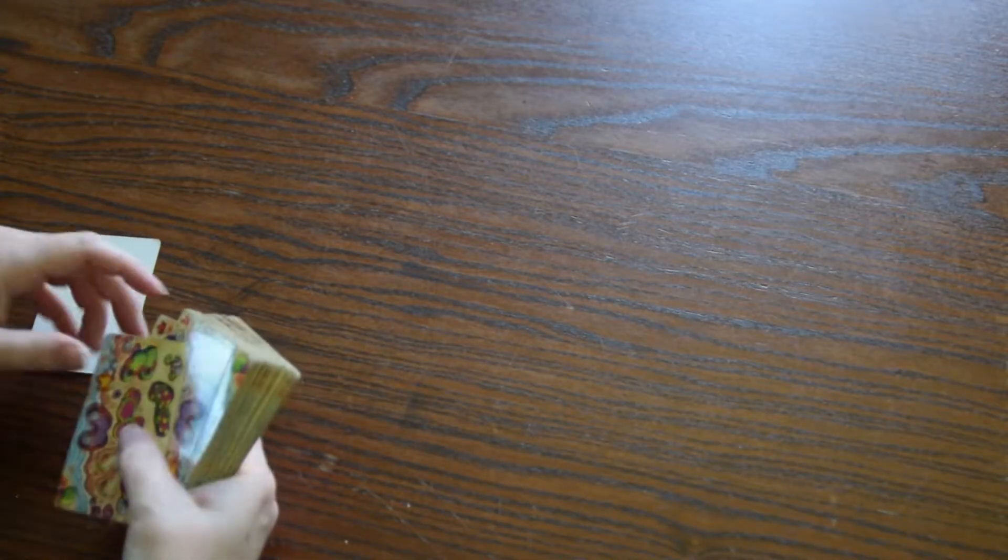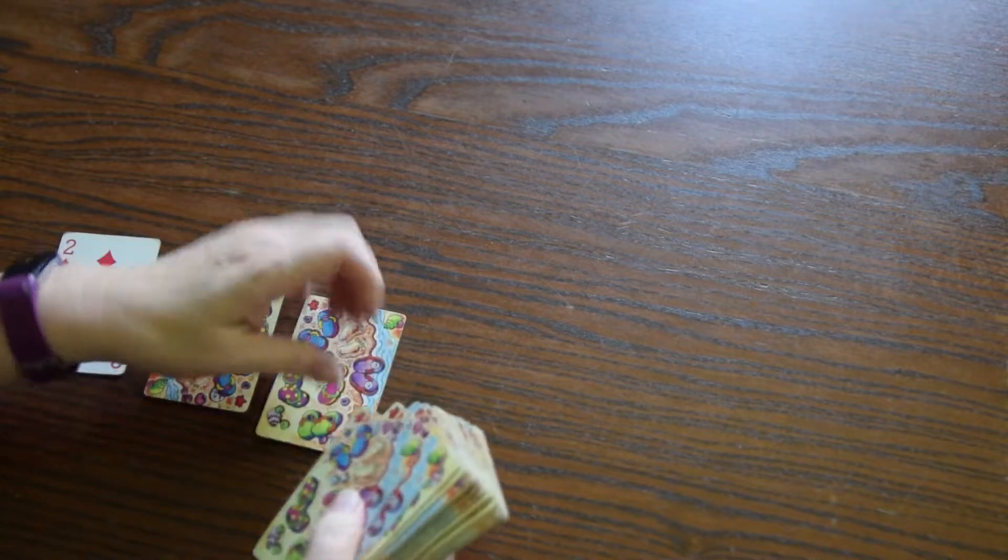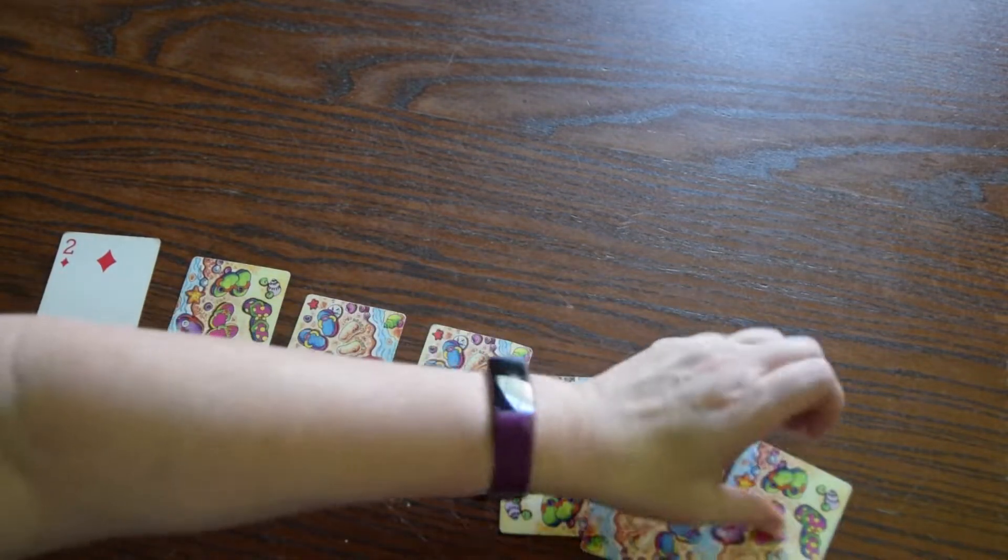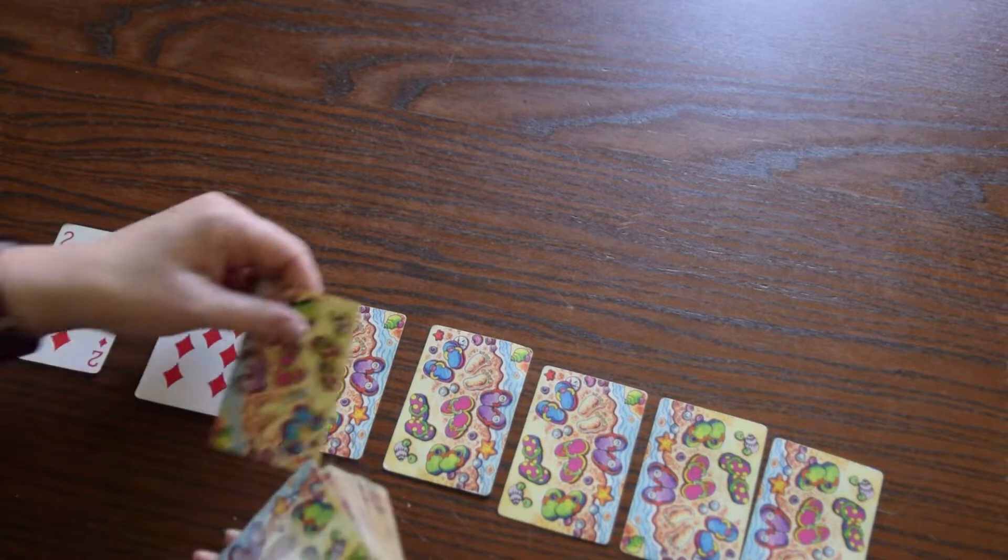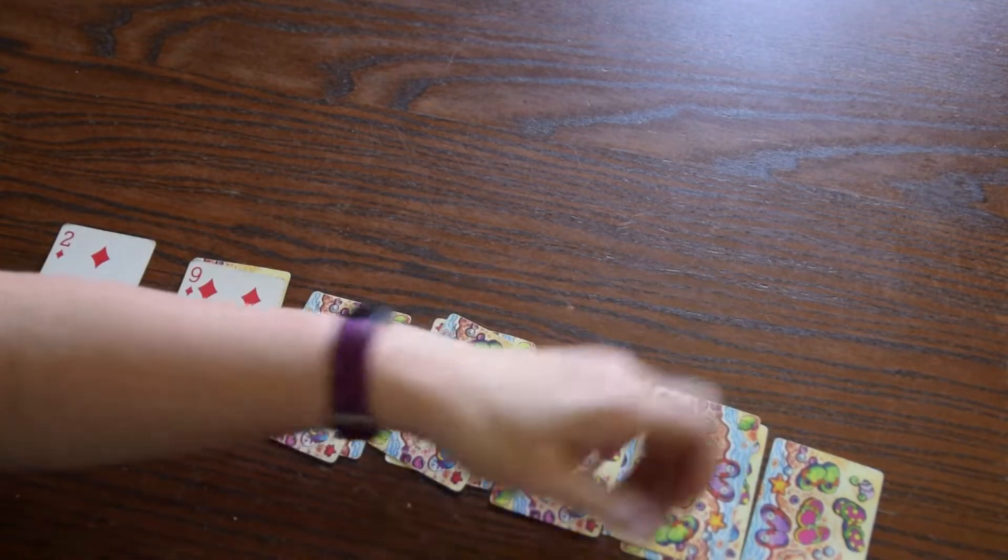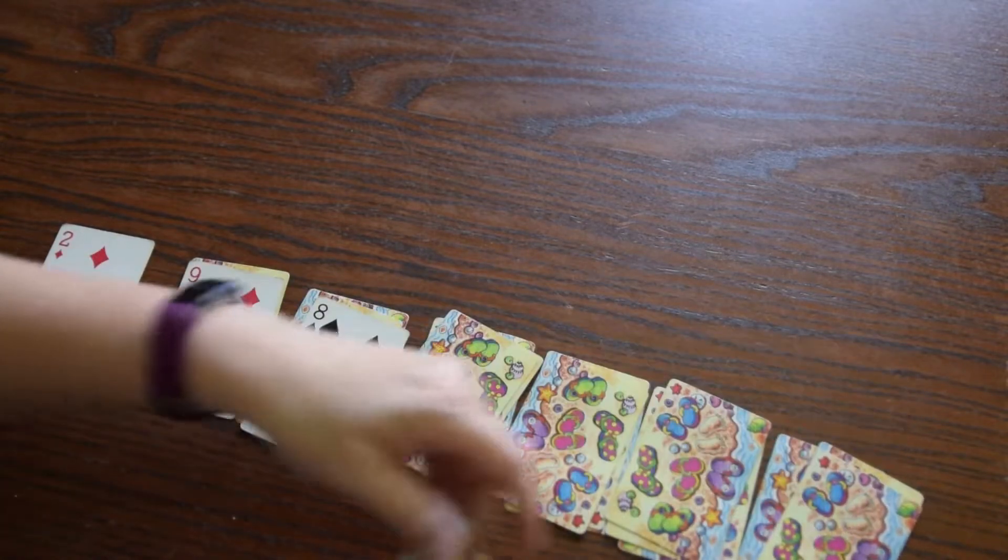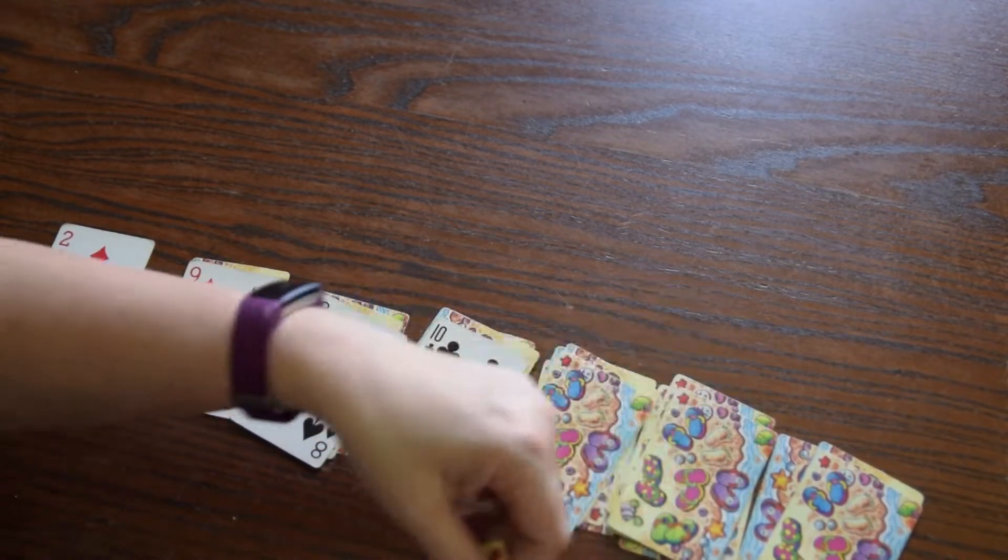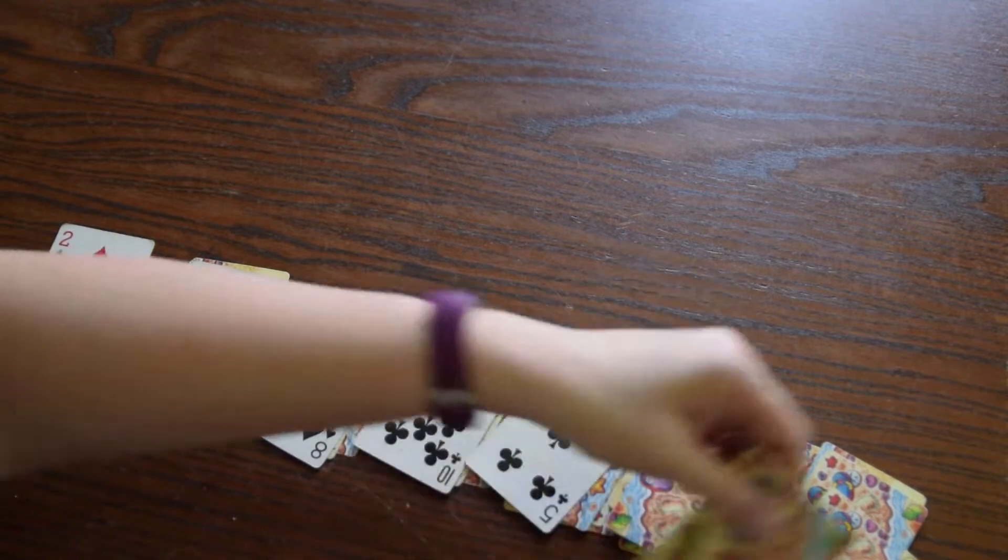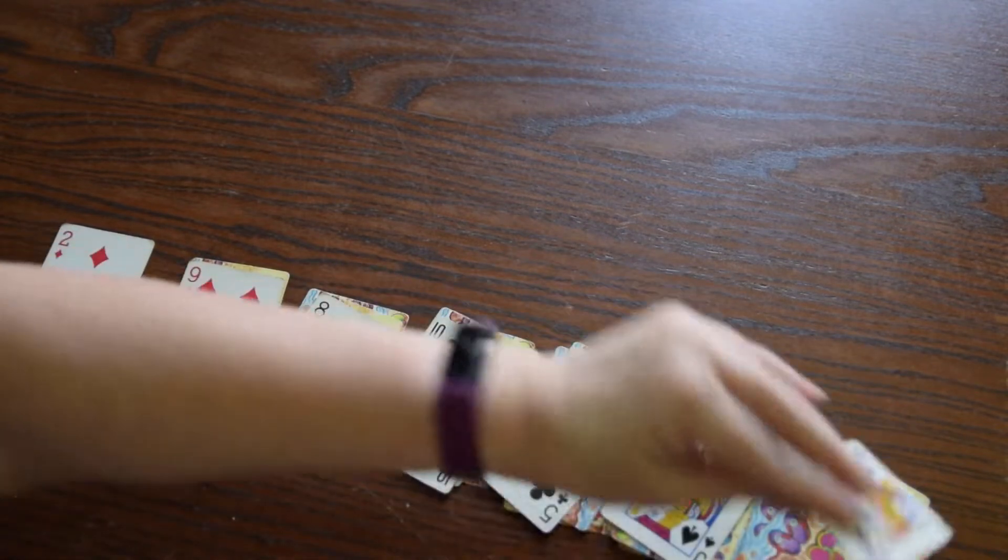To deal out the cards you're going to do one, two, three, four, five, six, seven. Then you're going to do that again, counting one through six, then one through five, then one through four, one through three, one through two, and one.